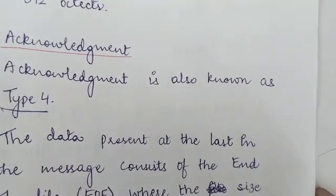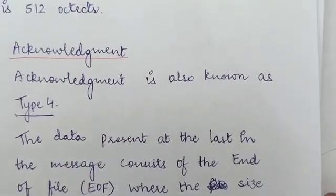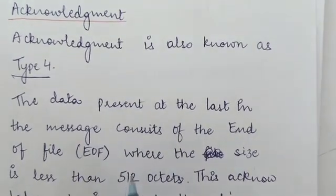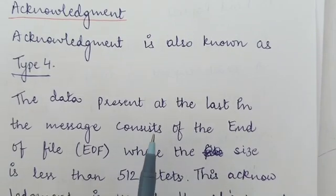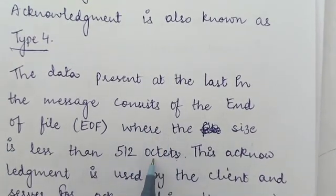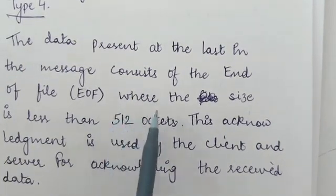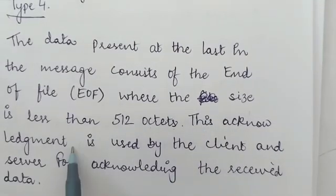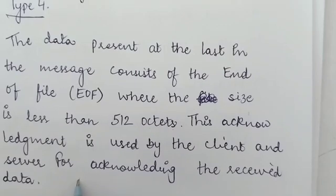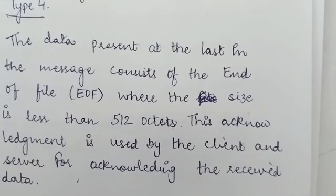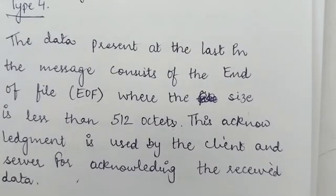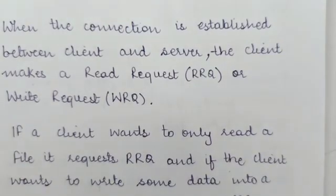The fourth format is Acknowledgement, also known as Type 4. The data present at the last part of the message consists of the end of file, where the size is less than 512 octets. This end-of-file portion is known as acknowledgement, and it is used by the client and server for acknowledging received data. Whenever a client or server receives data, acknowledgement is used to let the other side know that the data has been received.